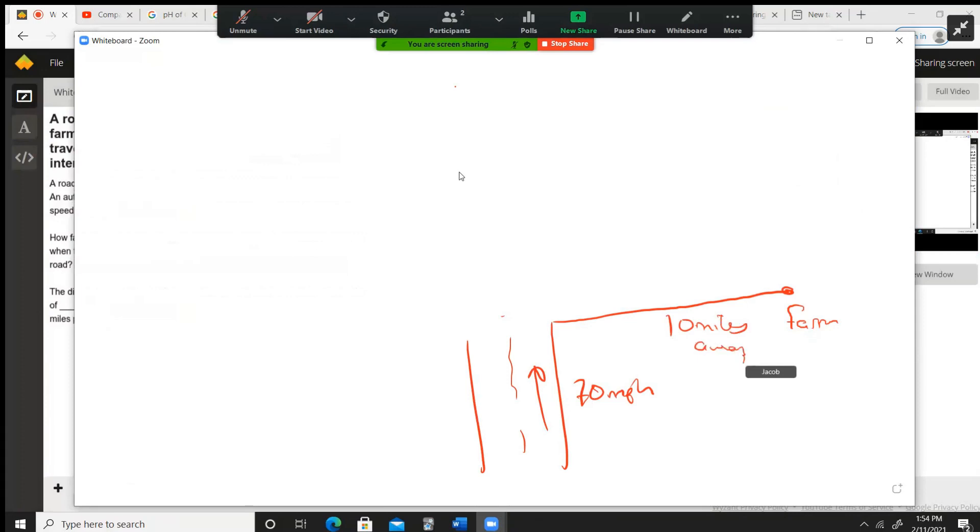So now we've got to figure out how far the car is going to be when it's 9 miles up. This is not drawn to scale, I apologize for that. Now what we do is we use the Pythagorean theorem. The Pythagorean theorem says a squared plus b squared equals c squared.